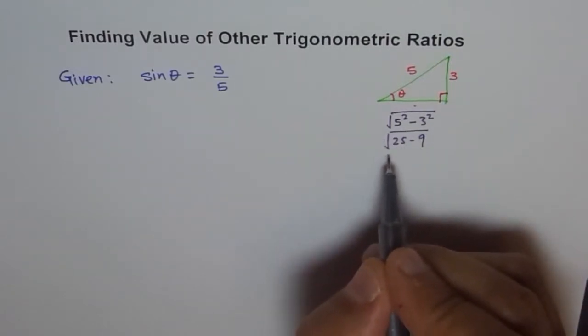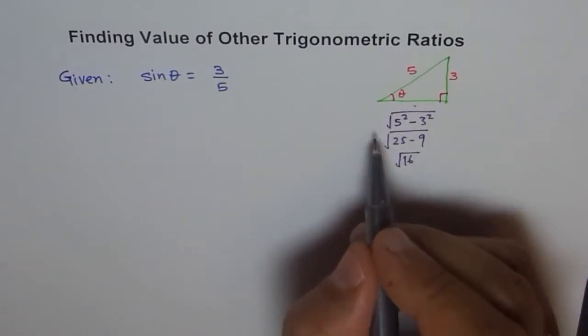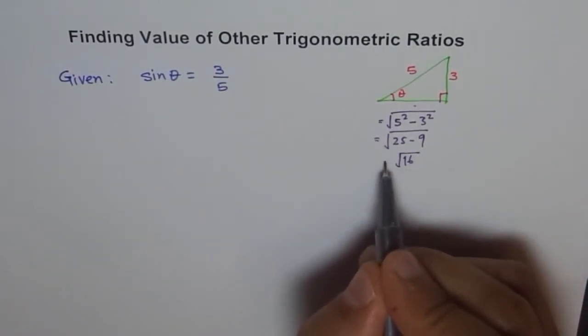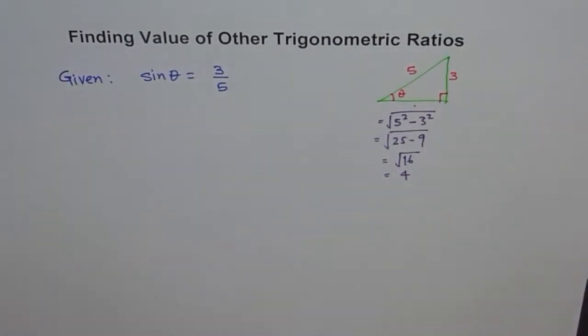Which gives us square root of 25 minus 9 is 16, which gives us a value of 4. Therefore, this side is 4 for us.